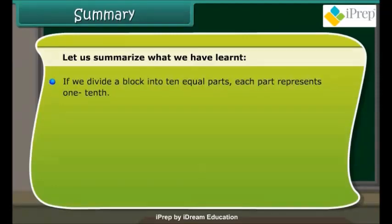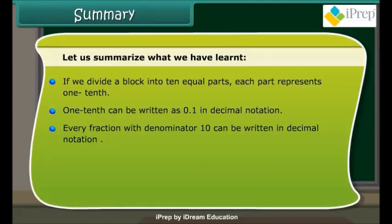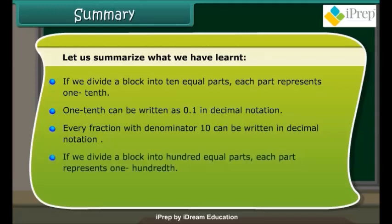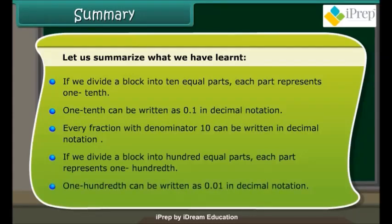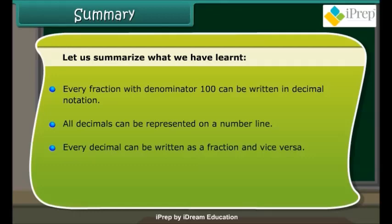Summary. If we divide a block into 10 equal parts, each part represents 1/10. One-tenth can be written as 0.1 in decimal notation. Every fraction with denominator 10 can be written in decimal notation. All decimals can be represented on a number line. Every decimal can be represented on a number line.